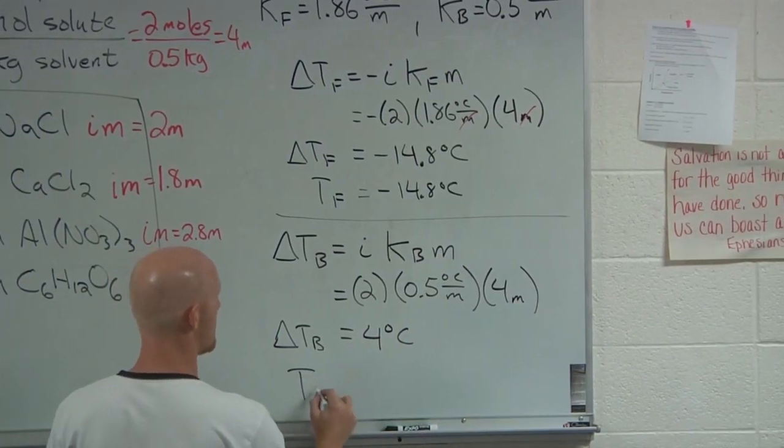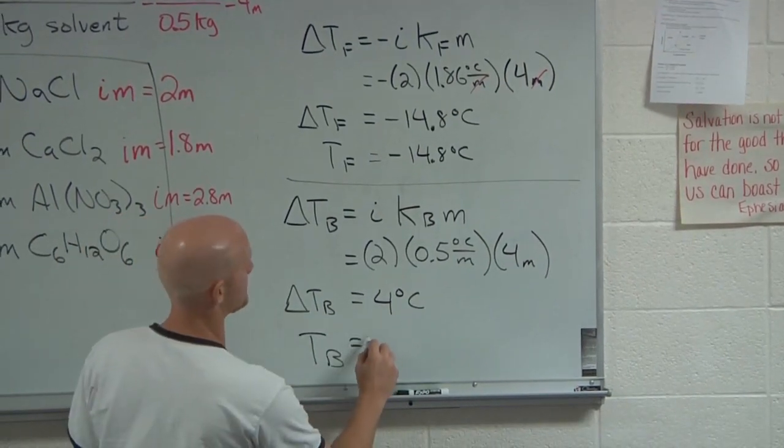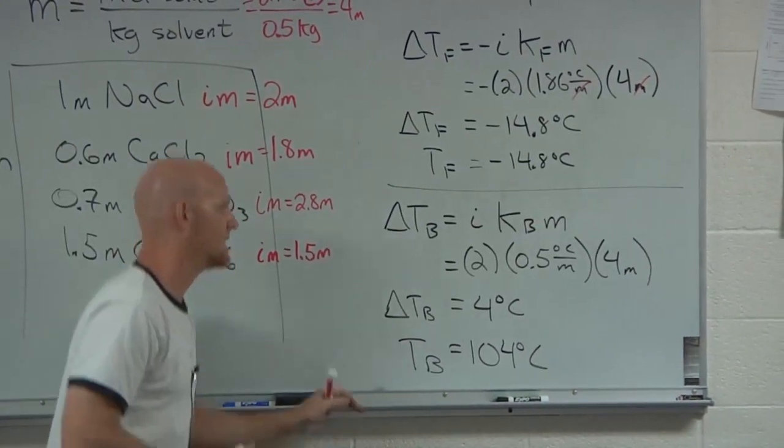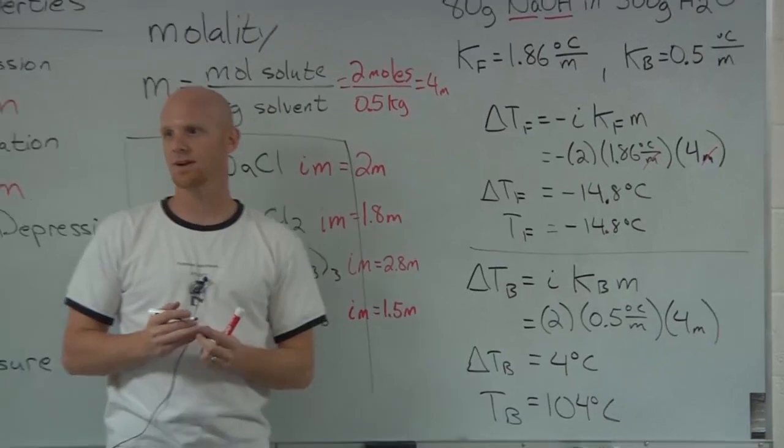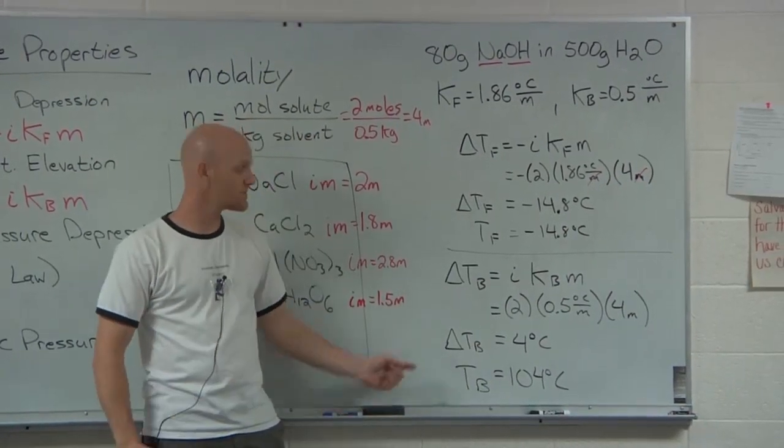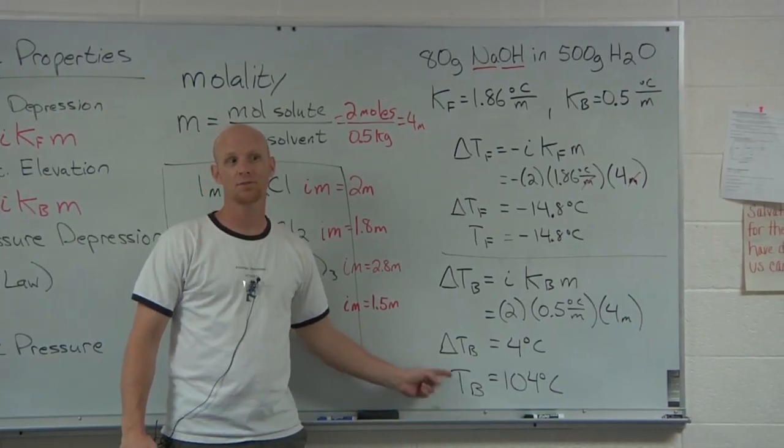And so then what would the overall boiling point be for that solution? Awesome, it would be 104 degrees Celsius. Take the normal boiling point of water, 100, and add in the change to get a total of 104. Either one of these could be the question. They could ask you for the change in the boiling point, or they could just ask you for the boiling point itself. So be careful.